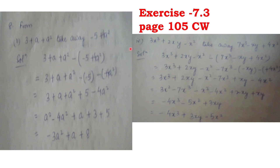The 4th subpart of question number 8 is: 3x cube plus 2xy minus x square, take away 7x cube minus xy plus 4x square. So the same steps we will repeat. You have to be very careful when subtracting — you may get two signs together, so you have to take care how the signs will change. Look here: 3x cube plus 2xy minus x square, minus in the bracket 7x cube minus xy plus 4x square.